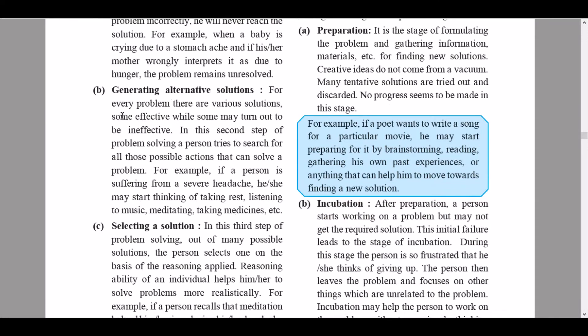The second step is generating alternative solutions. For every problem there are various solutions — some effective, while some may turn out to be ineffective. In this step, a person tries to search for all possible actions that can solve the problem. For example, if a person is suffering from a severe headache, he or she may think of taking rest, listening to music, meditating, taking medicines, etc. There are many possible solutions.